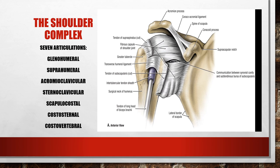The sternoclavicular joint is the anchoring point for the shoulder. The scapula is connected by muscles and has to glide around the ribs — this is called the scapulocostal area, where the subscapular fossa glides around the convexity of the ribs. The subscapular fossa is concave, allowing it to glide over the convex ribs. If it doesn't glide smoothly, we have problems.